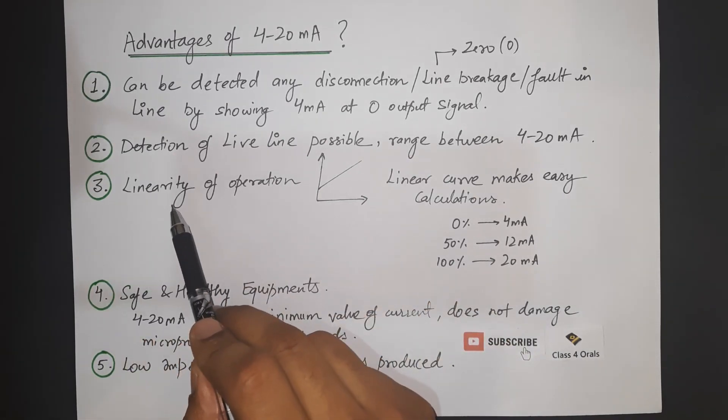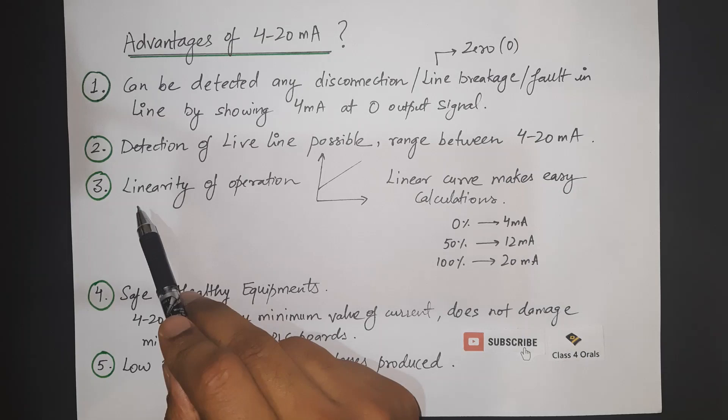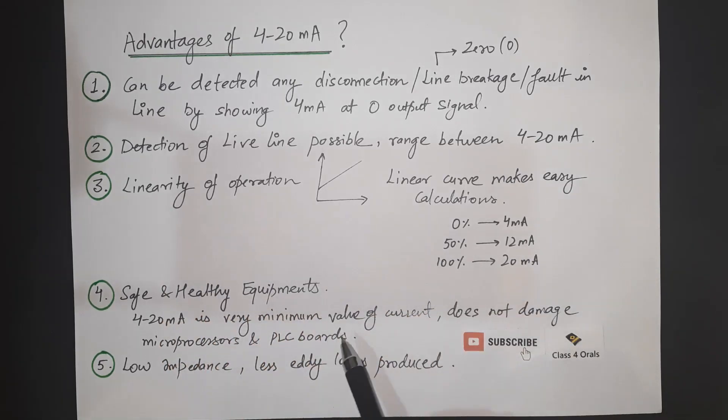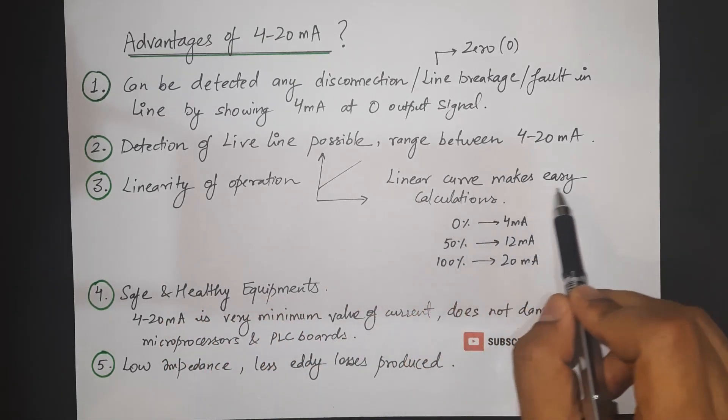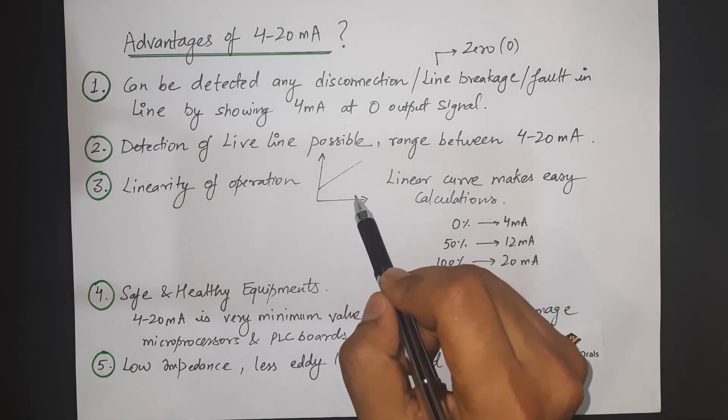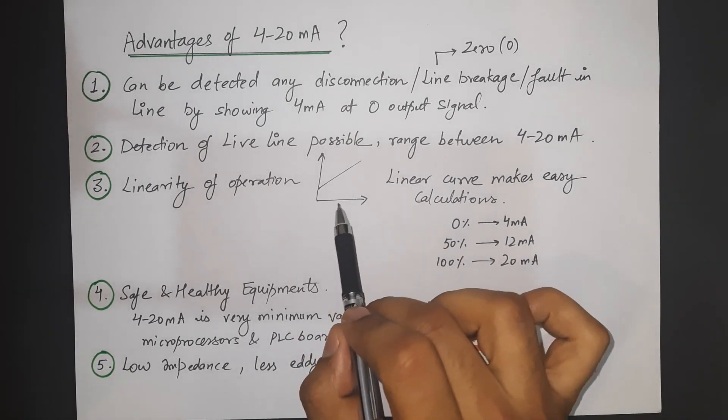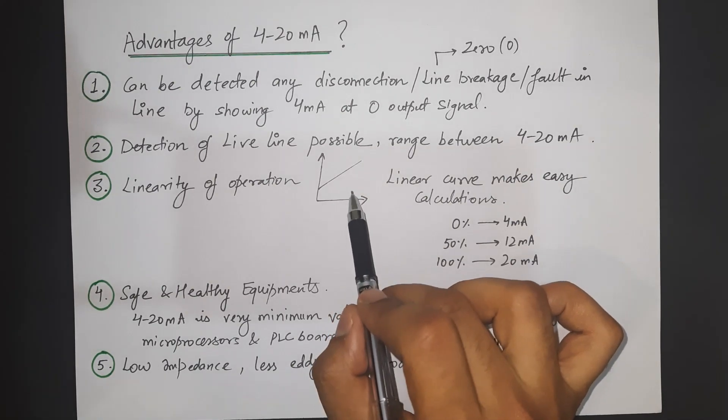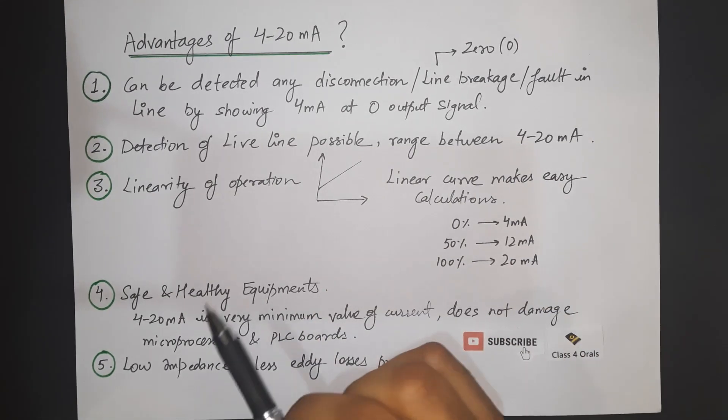Thirdly the advantage of 4 to 20 mA is the linearity of the operation. By the graph we have just seen the linear curve makes calculations very easy because it is very much easy to interpolate at different values of the output corresponding to the different mA range.